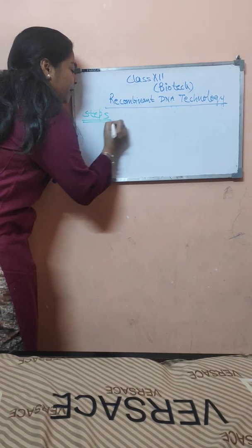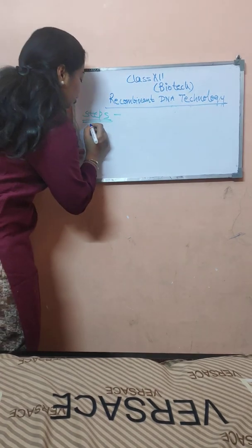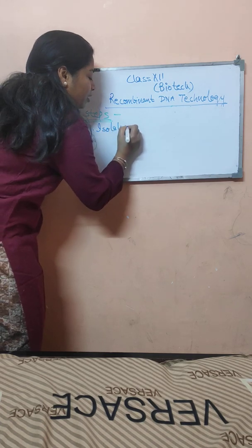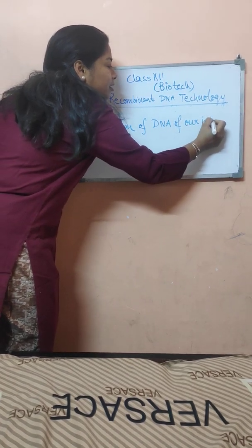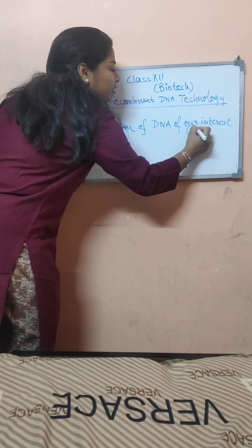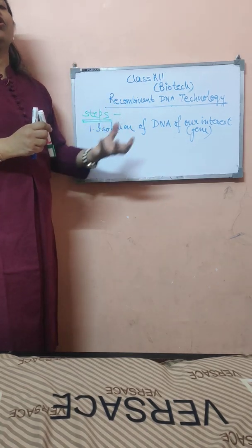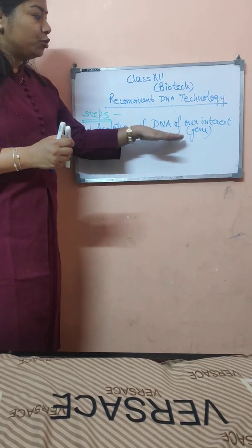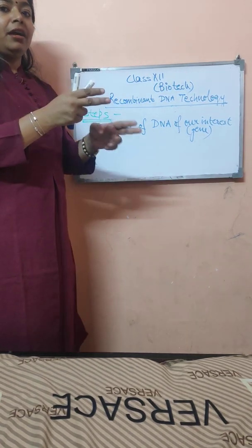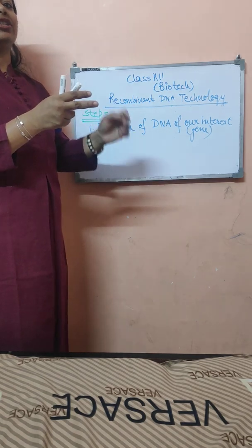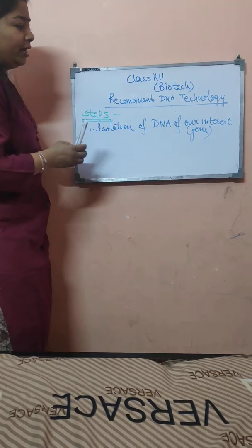First step. The first step of recombinant DNA technology is the isolation of the DNA of our interest. That is, if we want to clone or to produce the copies of insulin, we should isolate the insulin gene from the particular source and for that particular isolation we should know the particular position of that particular source.